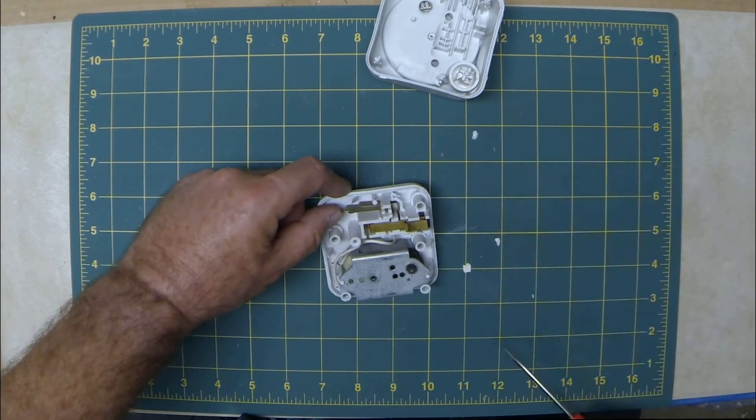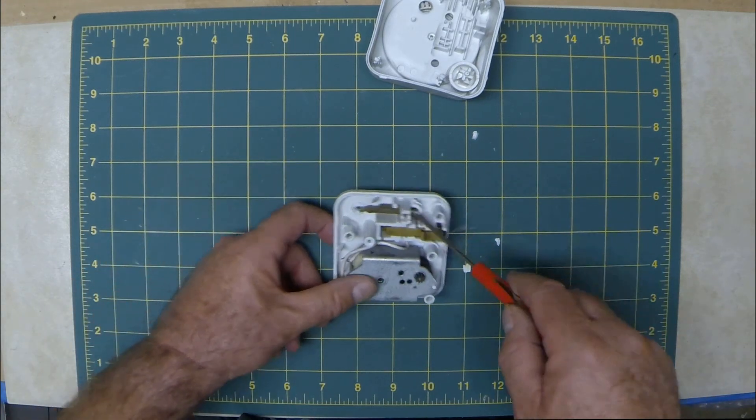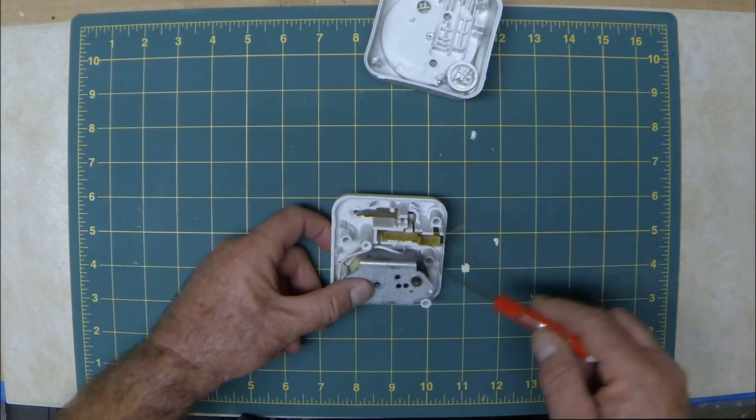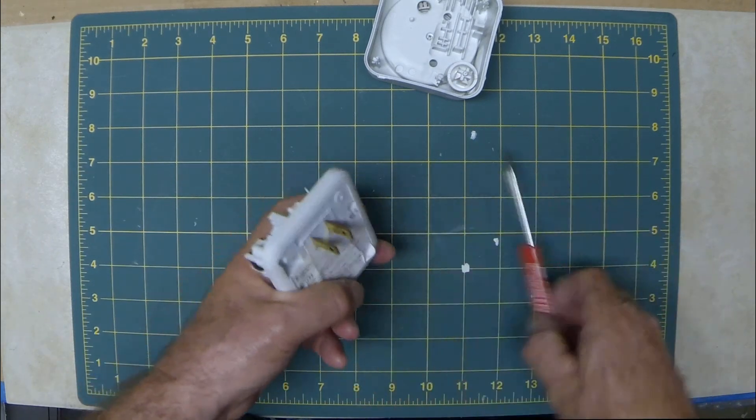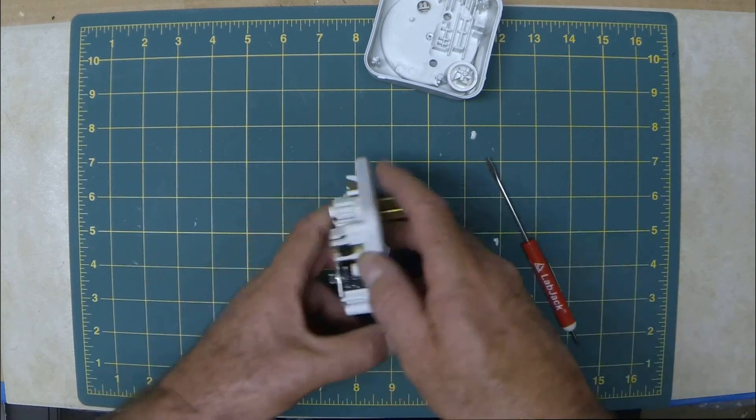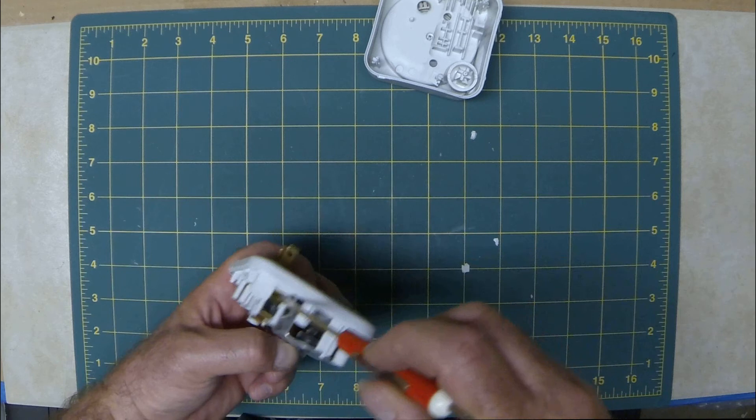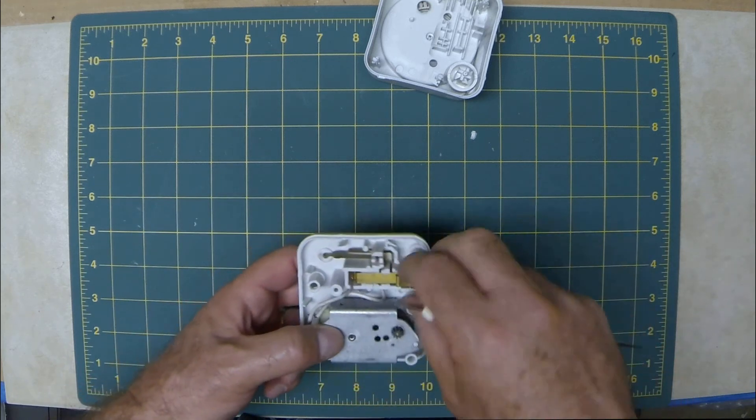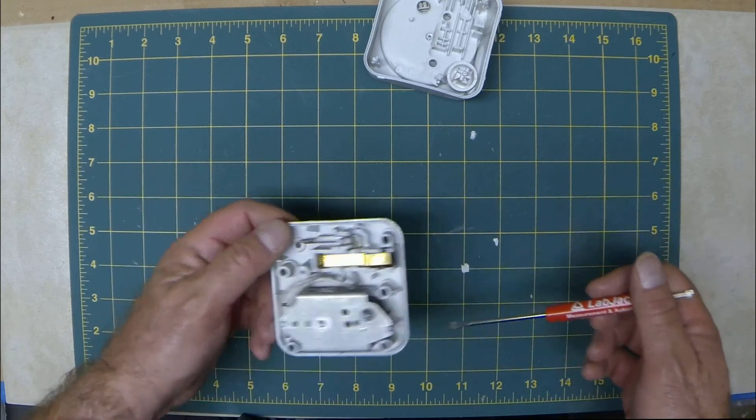The large gears operate that contact, and when that contact closes, power from the mains input here is transferred to the mains output here. When it's open, no power. Closed, power.